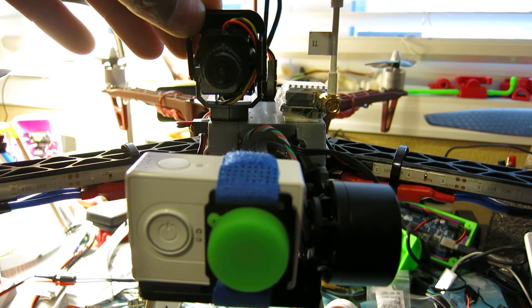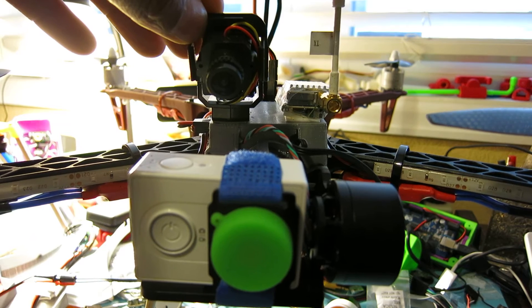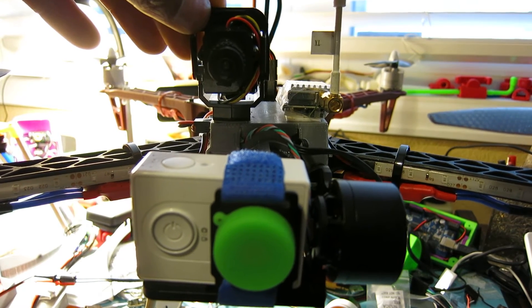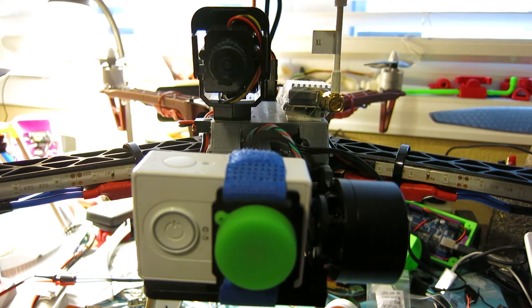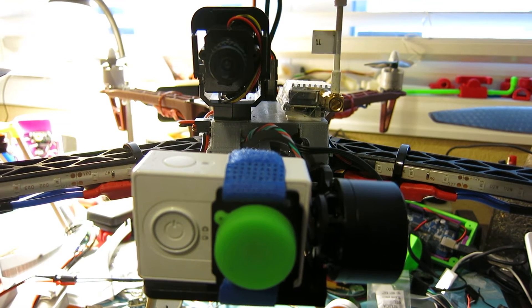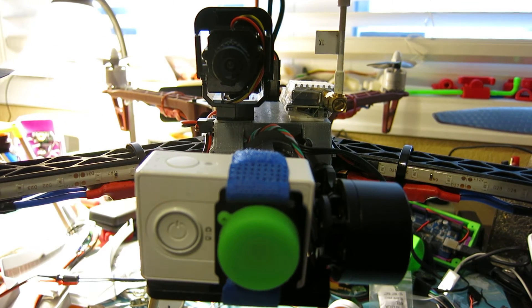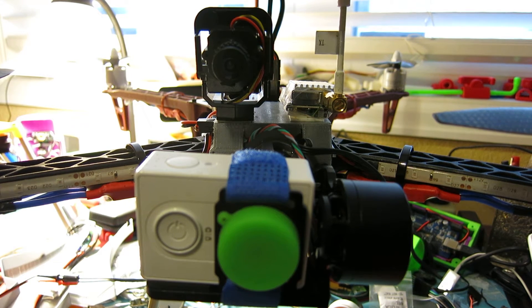But when I first got this camera, the lens was just a little too zoomed in for me and I did not feel comfortable flying that zoomed in. So I went and ordered a lens online and upgraded this to a 2.1 millimeter lens. As near as I can tell, the lens that came with this camera was a 3.6 millimeter lens, and just a couple millimeters makes all the difference.